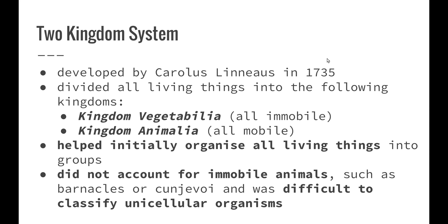We began with the two-kingdom classification system in 1735, developed by Carl Linnaeus. He divided all living things into kingdom Vegetabilia — all immobile organisms — and kingdom Animalia — all organisms that were able to move. However, it did not account for immobile animals such as barnacles, and it was difficult to classify unicellular organisms. In 1735, we did have the introduction of the light microscope, but it was a simple piece of technology, so we weren't really able to look at unicellular organisms in much detail.